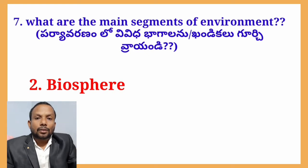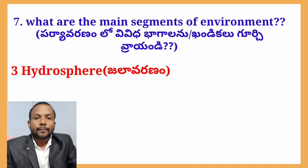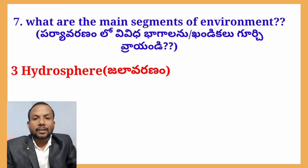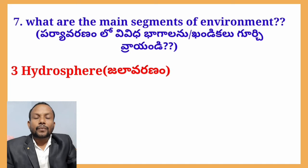The hydrosphere refers to all the water present on earth. This includes oceans, rivers, lakes, and glaciers. We can see polar ice caps and glaciers as part of the hydrosphere. Water exists in various forms across the planet's surface.